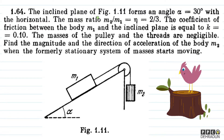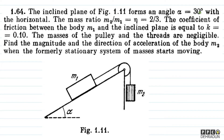The question says: the inclined plane of figure 1.11 forms an angle alpha equal to 30 degrees with the horizontal. The mass ratio m2 upon m1 is equal to eta equal to 2 upon 3. The coefficient of friction between the body m1 and the inclined plane is equal to k equal to 0.1. The masses of the pulley and the threads are negligible. Find the magnitude and the direction of acceleration of the body m2 when the formerly stationary system of masses starts moving.